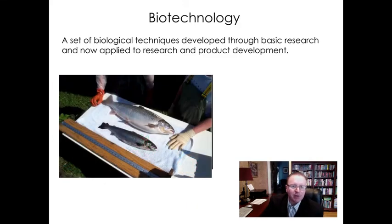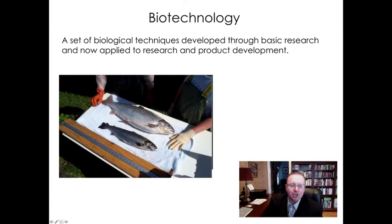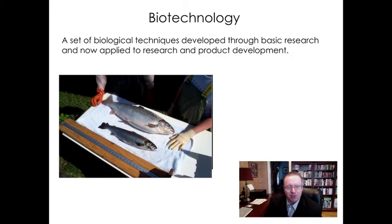Another great example of biotechnology is the production of food — in this case, farming Atlantic salmon in a much more efficient way. These two fish are the same age. The fish on the top includes a gene from a Pacific eel and also from the Chinook salmon, which makes it grow twice as fast as natural salmon. So these two fish, same species, same age, but the one on the top is much larger.